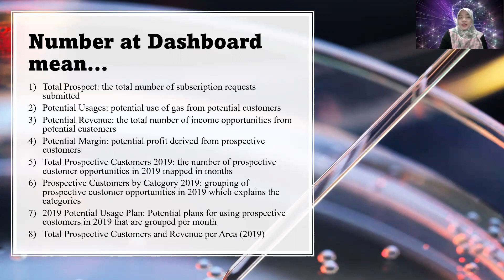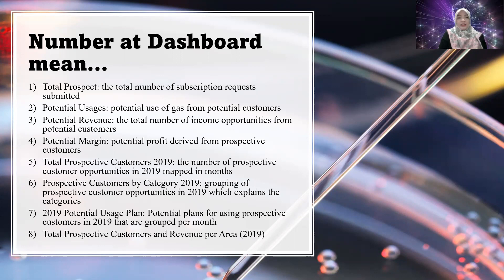Number six is the number of prospective customer opportunities mapped by area. Number seven is prospective customers by category in the same year — grouping of prospective customer opportunities which explains the categories. And also the potential use plan — potential plans for using gas by prospective customers in the same year.